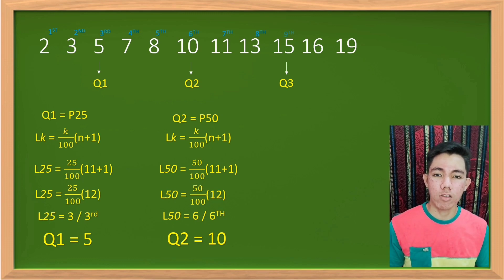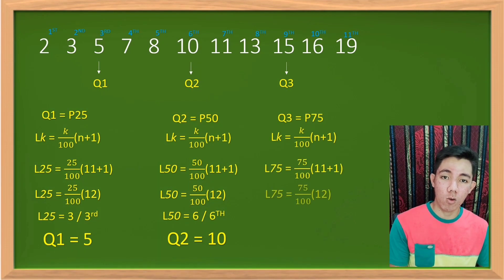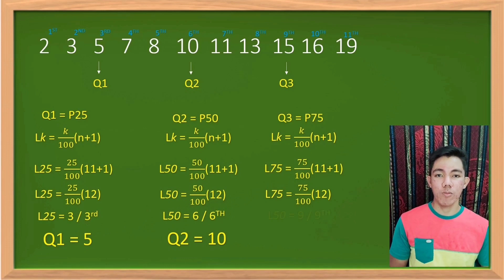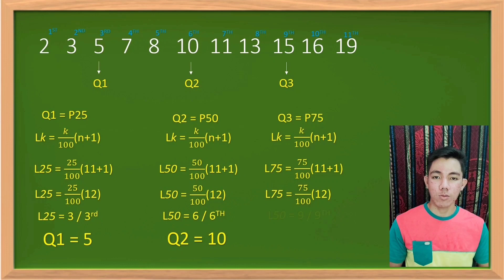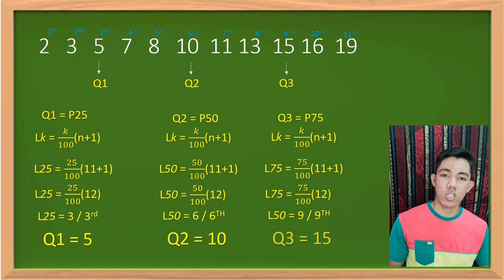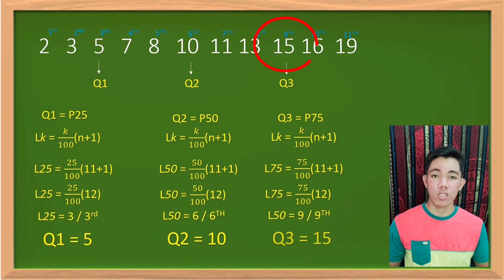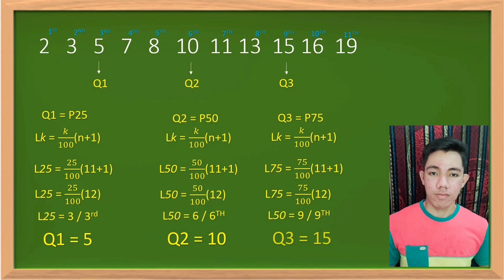Now why is Q3 equal to 15? Using the same formula: Q3 is the 75th percentile, so L₇₅ = (75/100) × (11+1) = (75/100) × 12 = 9. That means Q3 is the value at the 9th position in the data set, which is 15.